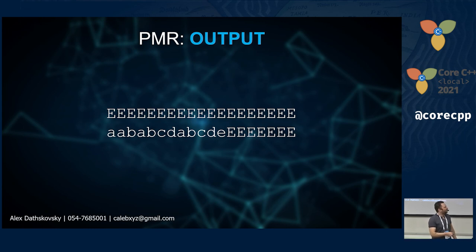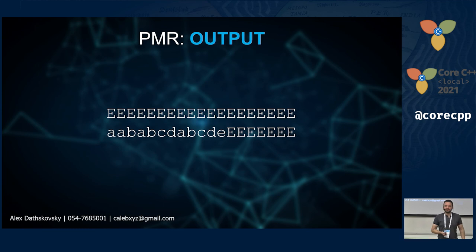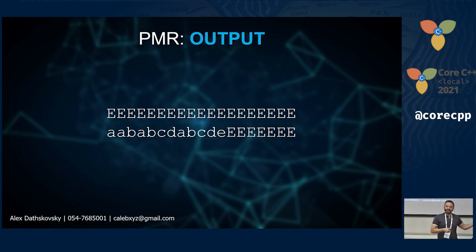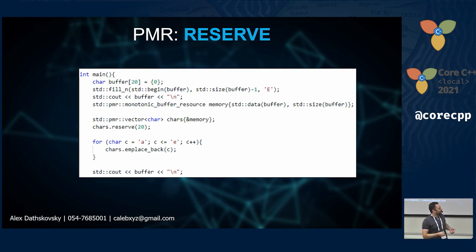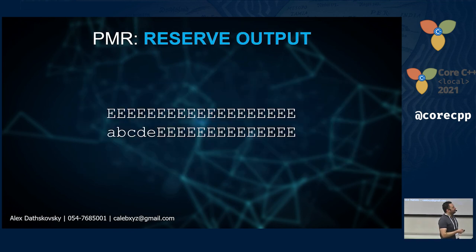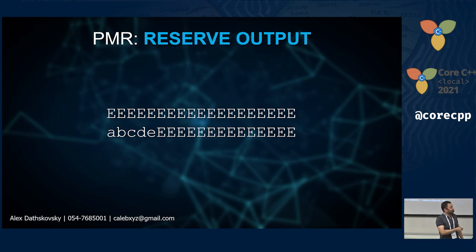When the PMR vector grows, it copies its memory to a new location still within the buffer — which is why you see a, b repeated as a, ab, abc, abcd, abcde in the output. The fix is to call reserve(20) upfront: the vector no longer needs to grow, so it just writes a, b, c, d, e without any copying. The output shows only those five characters, no repetition.